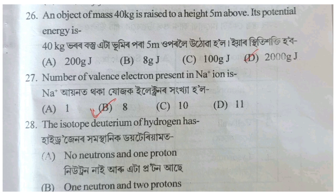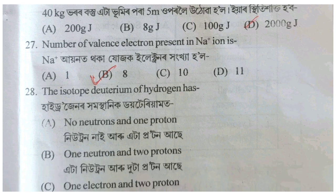The number of valence electrons present in the Na⁺ ion is discussed — sodium ion configuration is considered. Also, the isotope deuterium of hydrogen gas is mentioned.